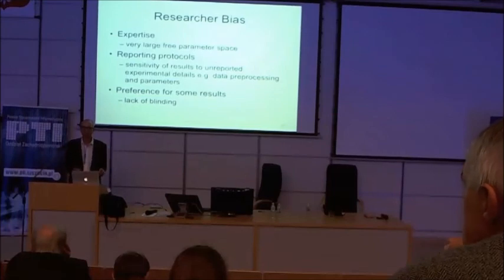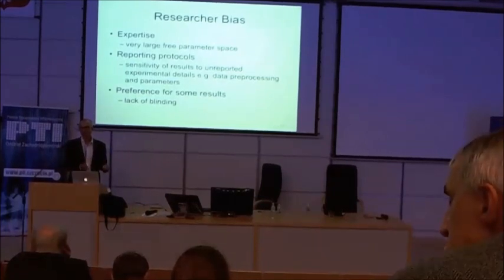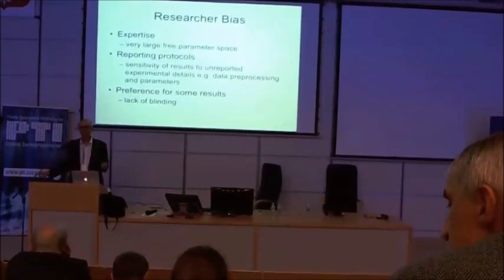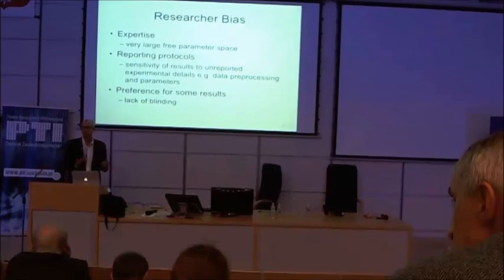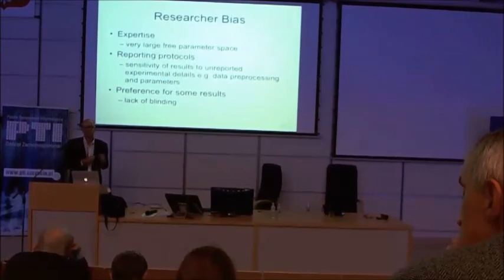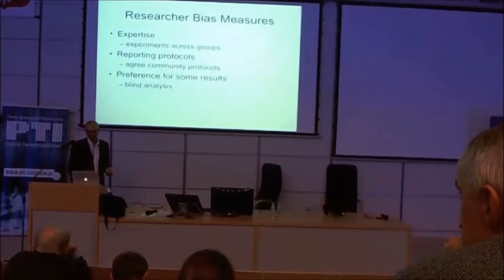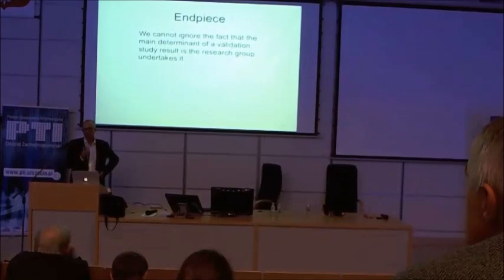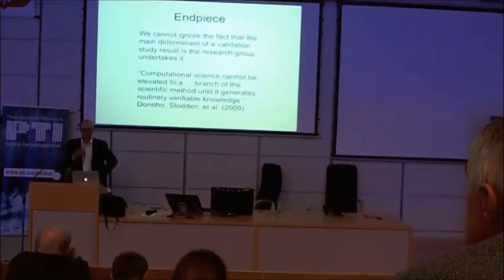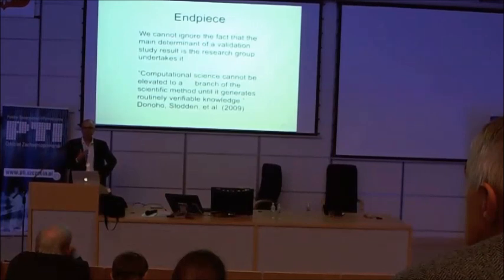And the final thing: how do we deal with our preference for some results over others? We need to do blind analysis. That's something I've now committed to — experimental work that I and my team will do from now on will use blind analysis. That means at least two people are involved: somebody takes the results and removes the label of the treatments. So if one treatment is case-based reasoning and another is some benchmark technique, we throw away those labels and do the analysis not knowing what the different treatments are. The fact that I might have a built-in bias — even subconscious — towards case-based reasoning is at least reduced by the fact that I no longer know which results were due to it. To wrap up: I don't think we can ignore that the main determinant of a validation result is who does it. Computational science can't be seen as such until we find ways of routinely generating verifiable knowledge. And it seems we're far from that. Thank you.